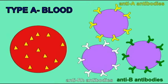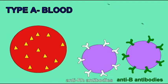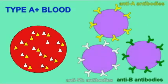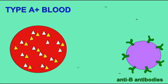Individuals who are A negative produce A antigens on their red blood cells. Antibodies which react against A would react against self, so must be inhibited, and only anti-B and anti-RH antibodies can be produced by white blood cells. In an individual who is A positive, both A and RH antigens are on red blood cells, so antibodies which react against A and RH would react against self, and only anti-B antibodies can be produced.